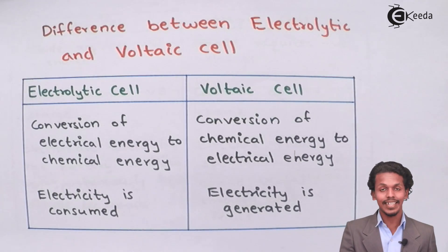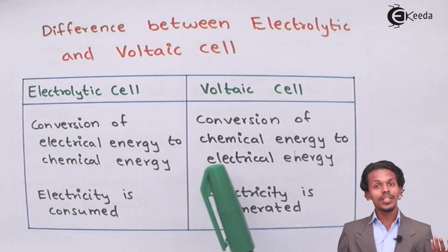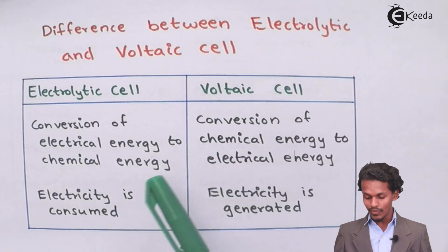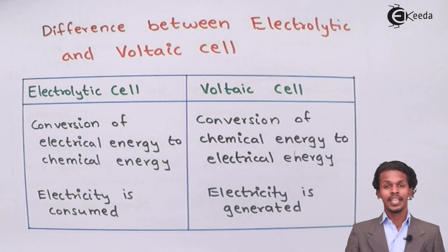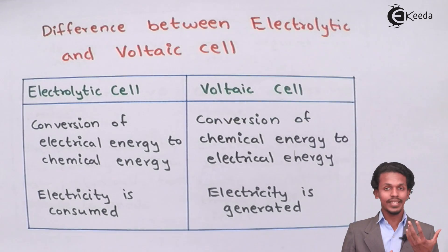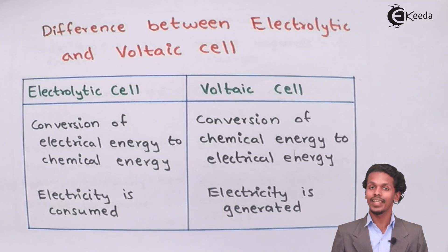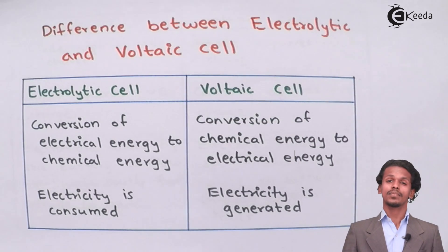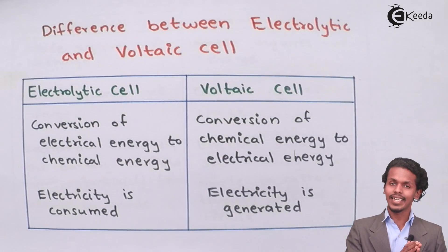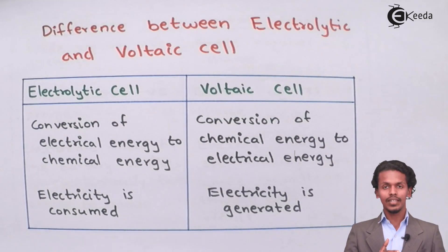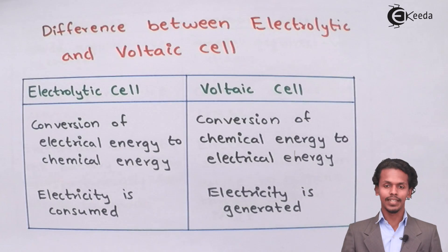It means you have to provide electricity for the chemical reaction to occur. Talking about the voltaic cell, it is a cell in which the conversion of chemical energy to electrical energy takes place — the reactants involved in the reaction produce electricity in the form of electrons, which can also be measured. So the main difference is: electrolytic cell converts electricity to chemical energy, and voltaic cell converts chemical energy to electrical energy.